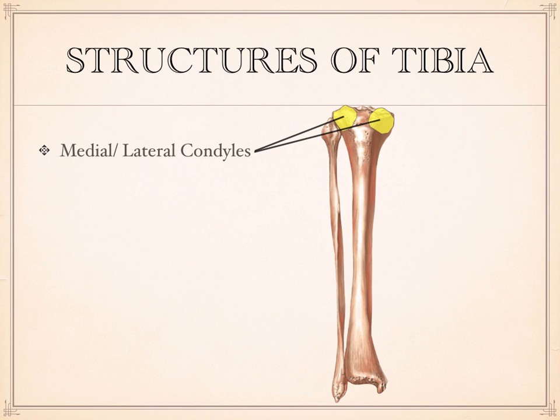If you have the tibia separate from the fibula, look down at the distal end and look for that little hook of bone — it is on the medial side, away from where the fibula would be. The condyle straight above that hook-like feature would of course be the medial condyle. Condyles are rounded structures that are involved in a joint.